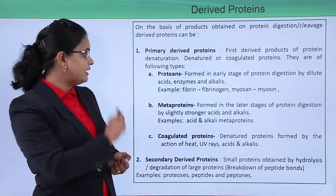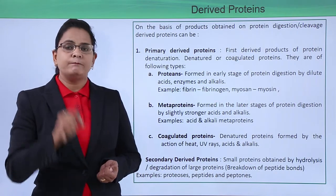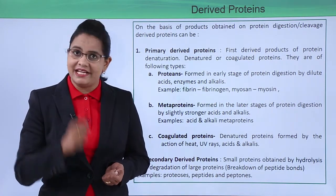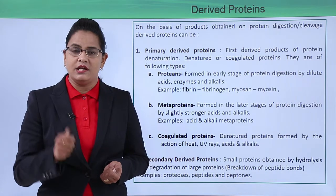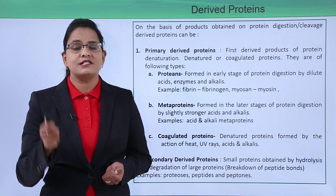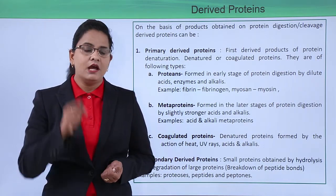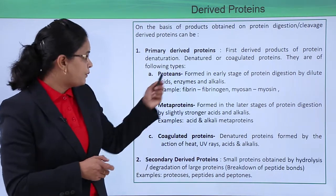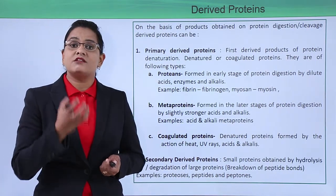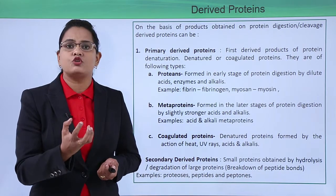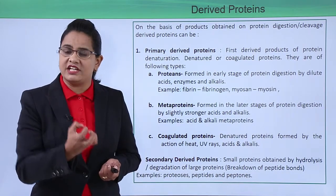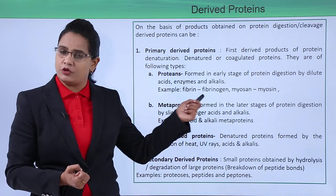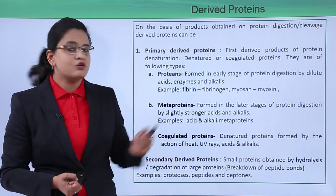Primary derived proteins are those obtained by denaturation — denaturation by different agents like acids, alkali, or heat. They are further categorized as proteans. Proteans represent the first stage of the protein obtained right after the process of denaturation has started. Examples are fibrin protein of fibrinogen, and myosin.